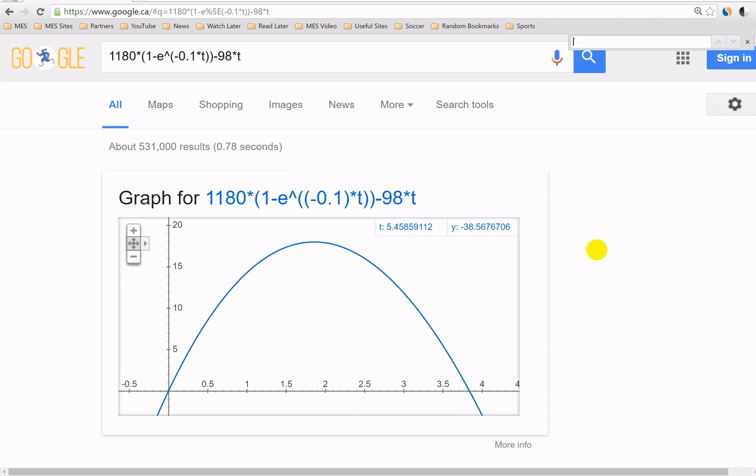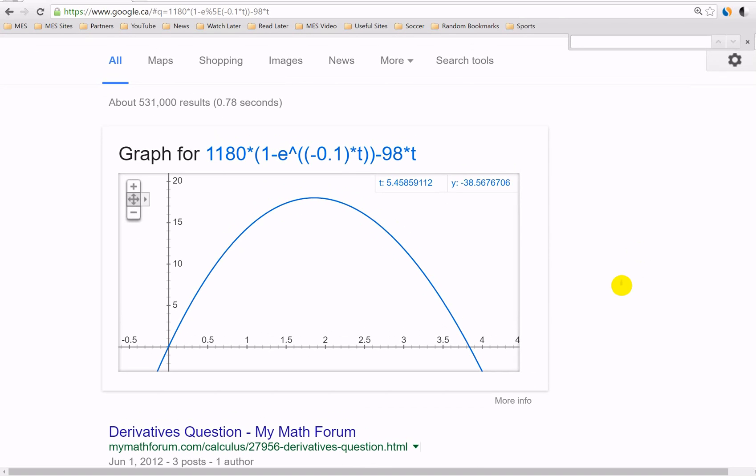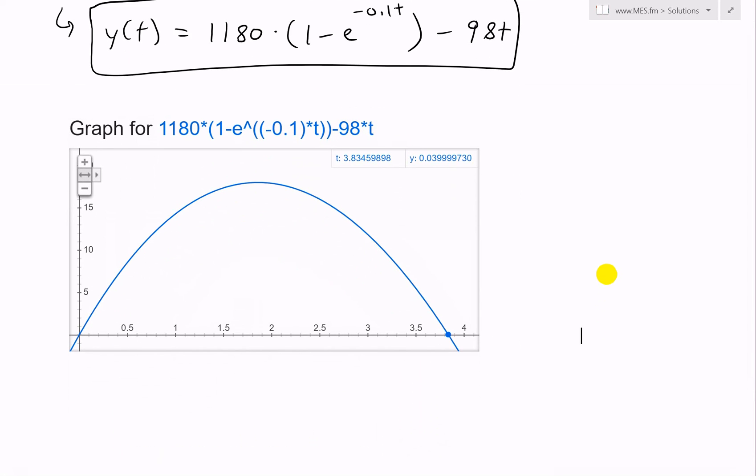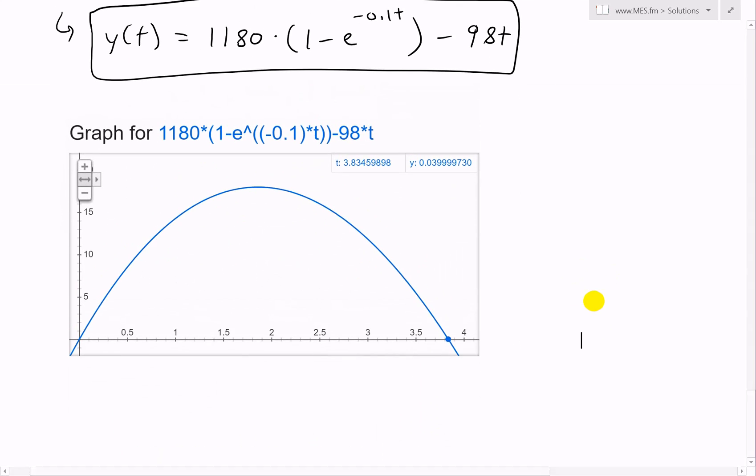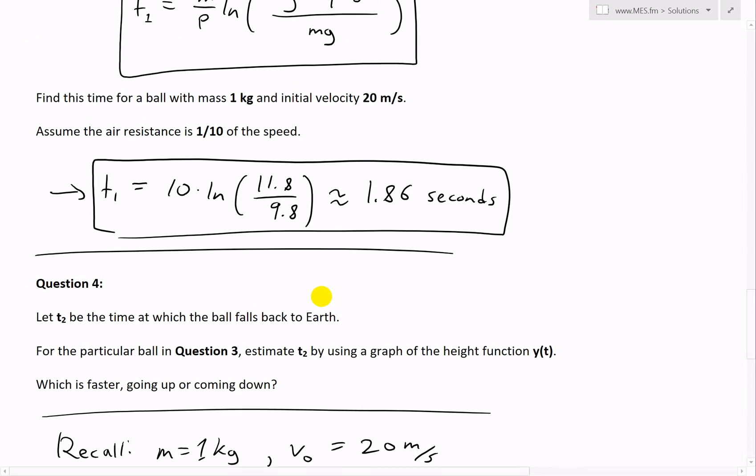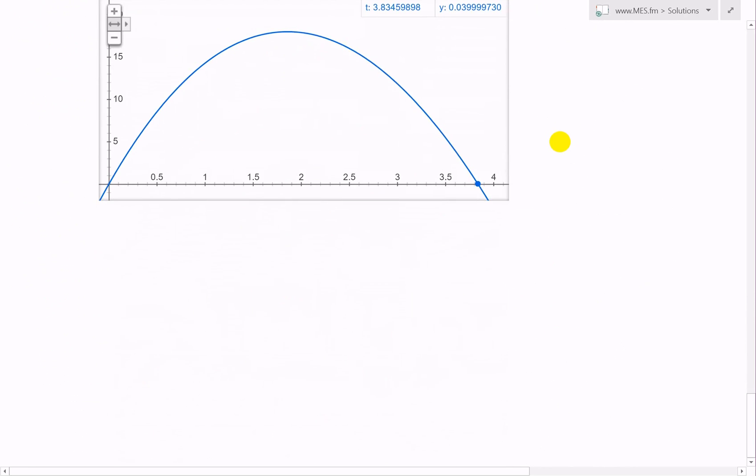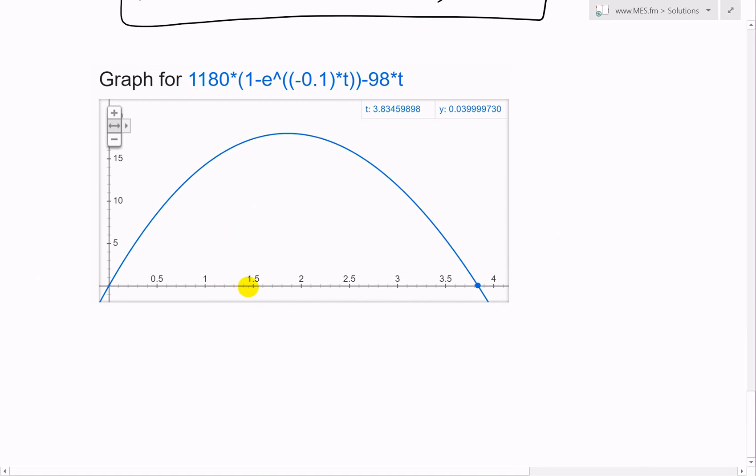Here I've graphed out this function with this Google search calculator. As you see it goes like this, it goes all the way back down. You have it at time t equals zero, you have the height is zero, you throw it to the maximum height here, and it comes back down. Let's see if 1.86 seconds is correct. At 1.86, which is correspondingly correct to the maximum height.